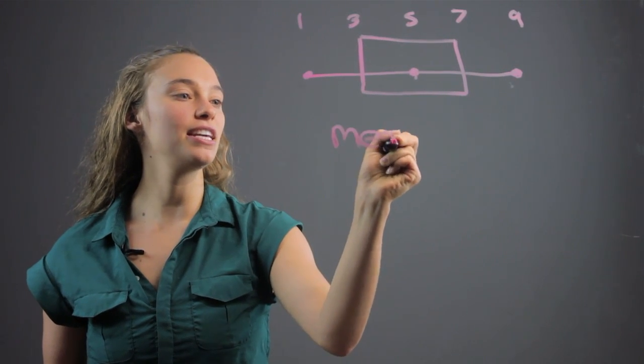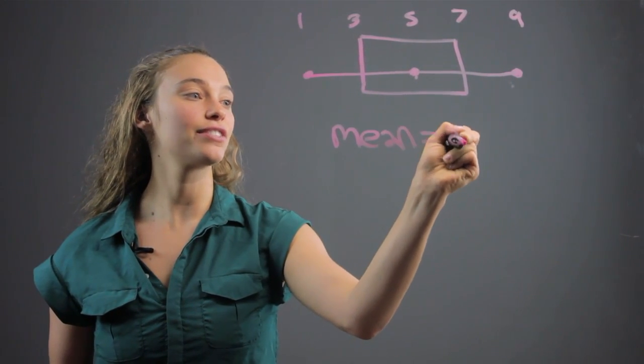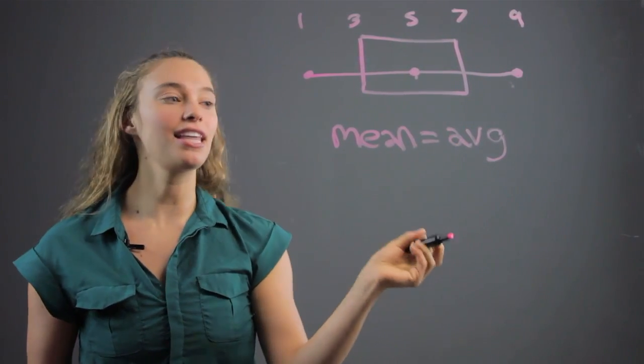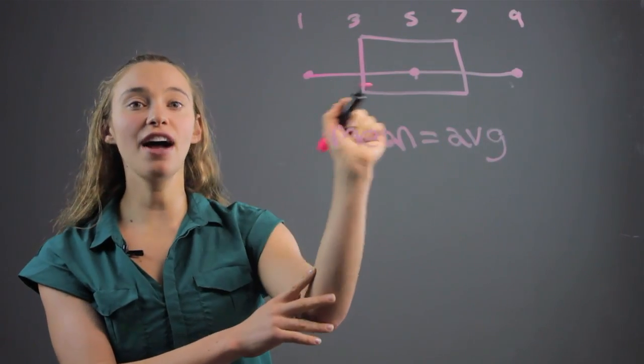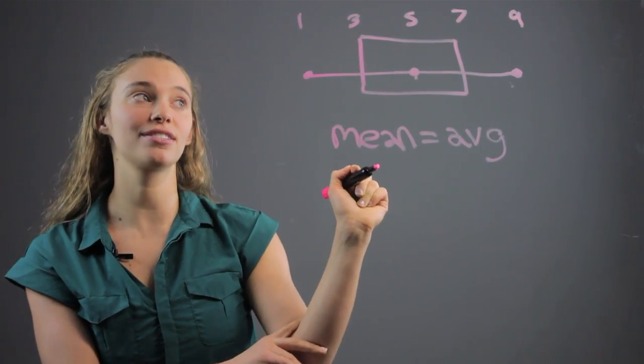So the mean is going to be the average of those numbers. What does that mean? That means that we add all the numbers together, and then we divide by the number of numbers.